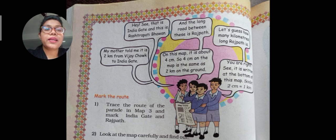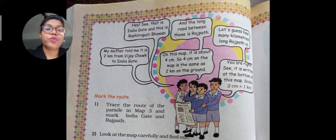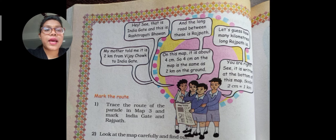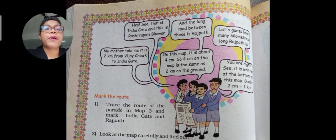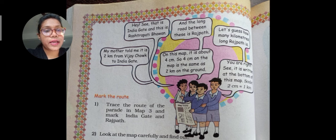One member of the group says, 'This is India Gate and this is Rashtrapati Bhavan on the map.' His mother told him it is 2 km from Vijay Chowk to India Gate.